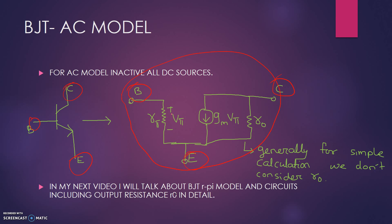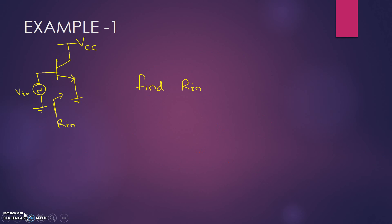Vpi is the potential drop across Rpi, Gm is the transconductance, and R0 is the output resistance of the collector terminal. Generally, for simplification of our calculation, we don't consider R0. So, first example: in this circuit, we have to find R_input.